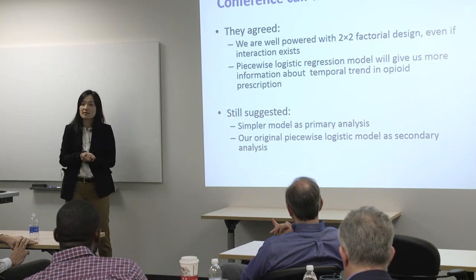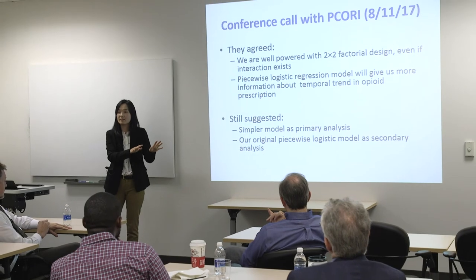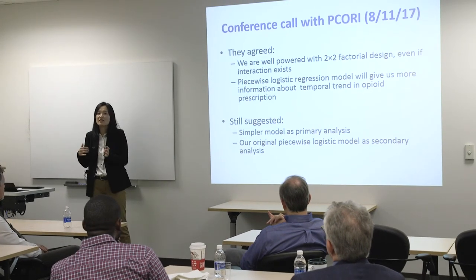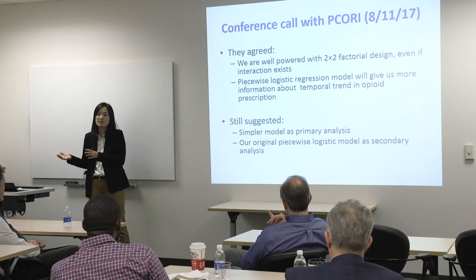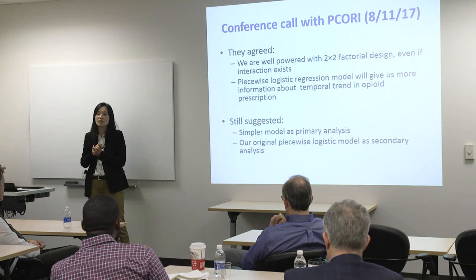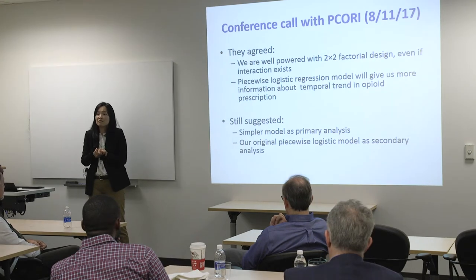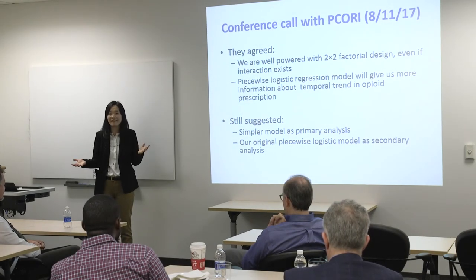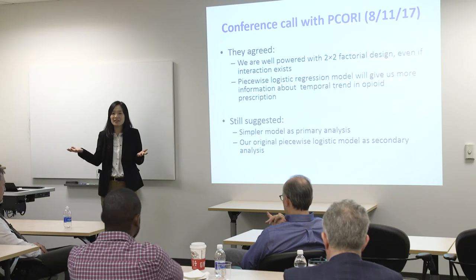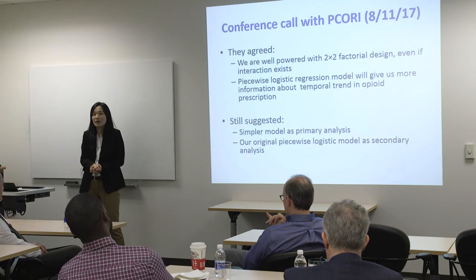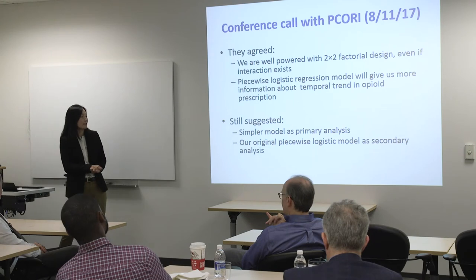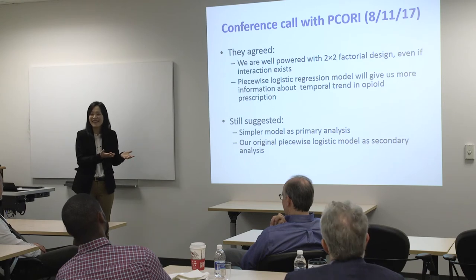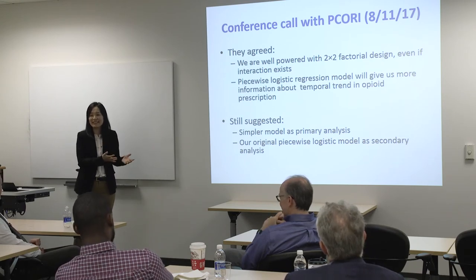What they suggested was: do your piecewise logistic regression, but do it as a secondary analysis. As a primary analysis, she still preferred a simpler method, like chi-square test or logistic regression without time as a covariate. We agreed to do it — basically, we are going to do both analyses anyway. It's just wording: which one is primary and which one is secondary. That's how it ended. And actually, at the end of the conference call, they said they liked my report — it was very clear and detailed.